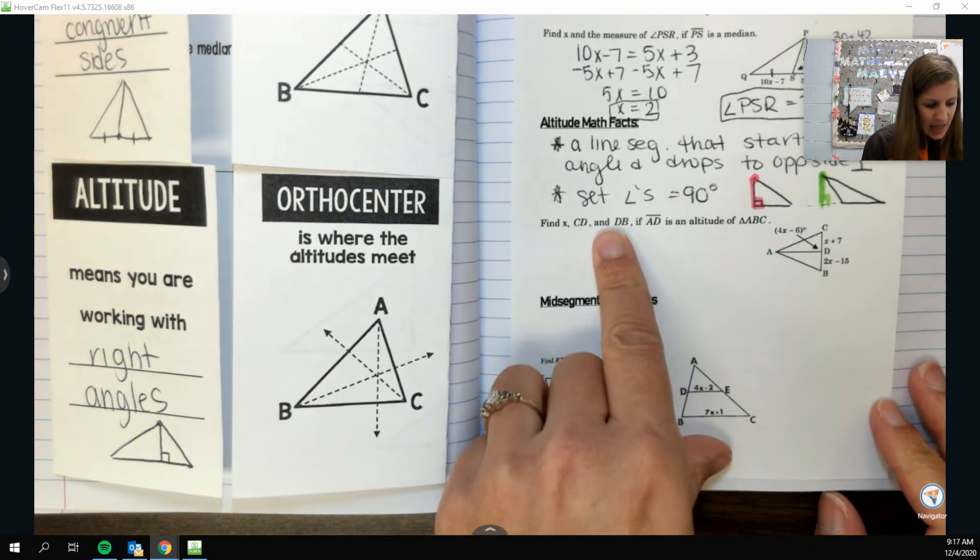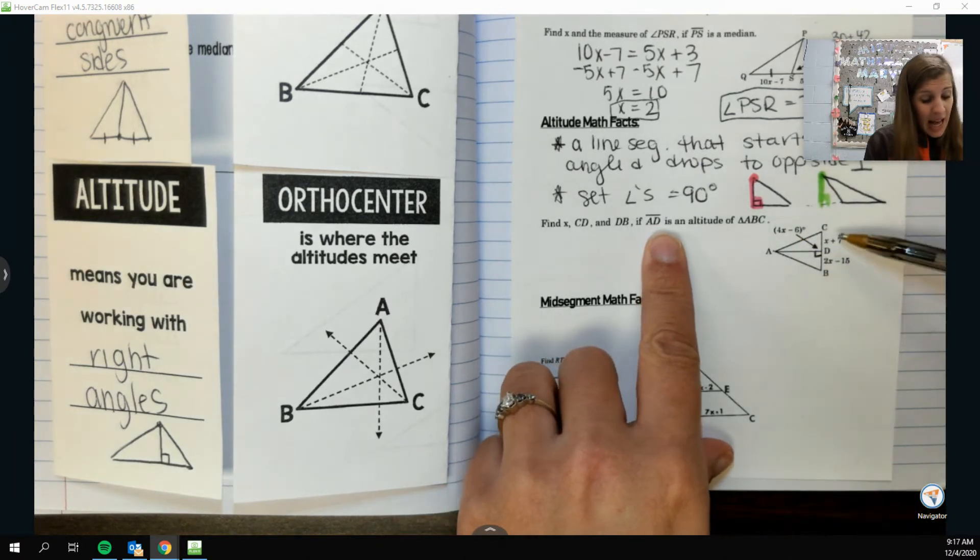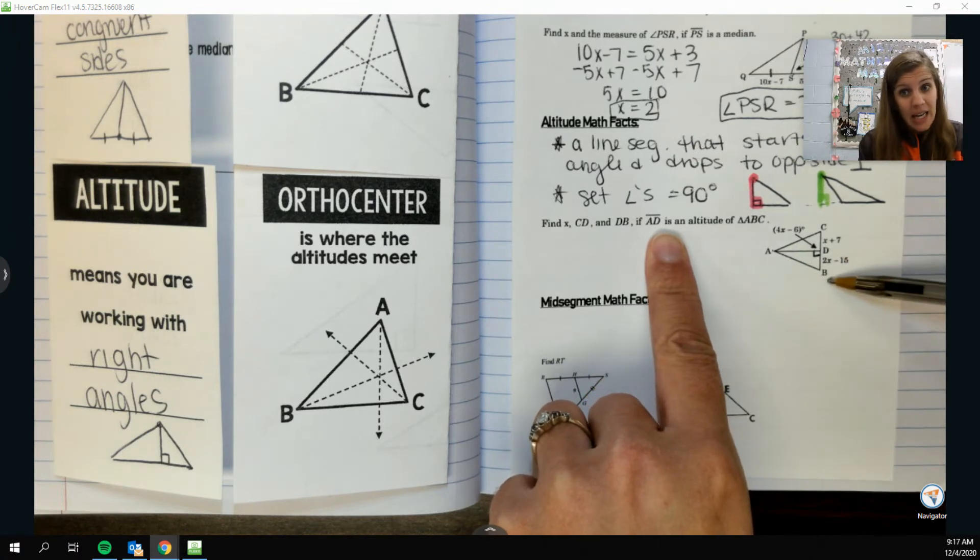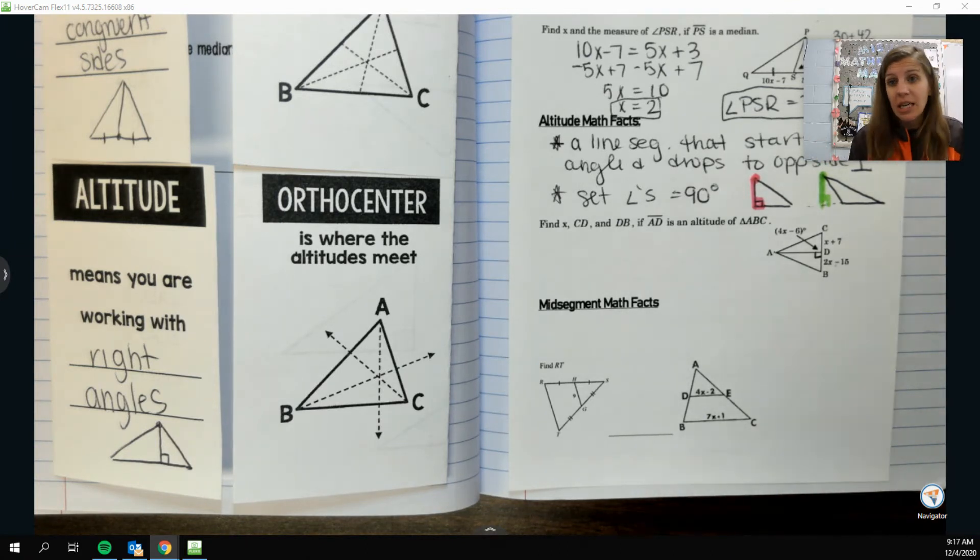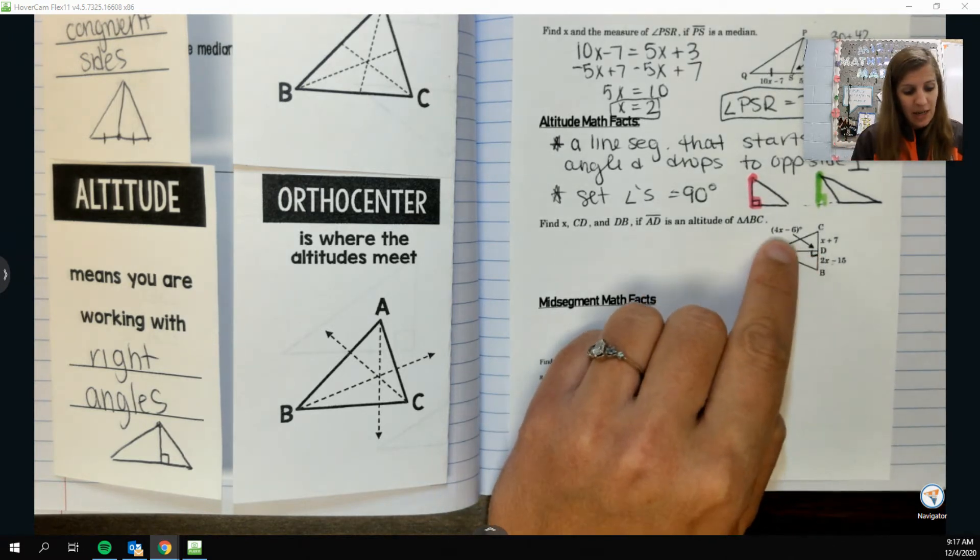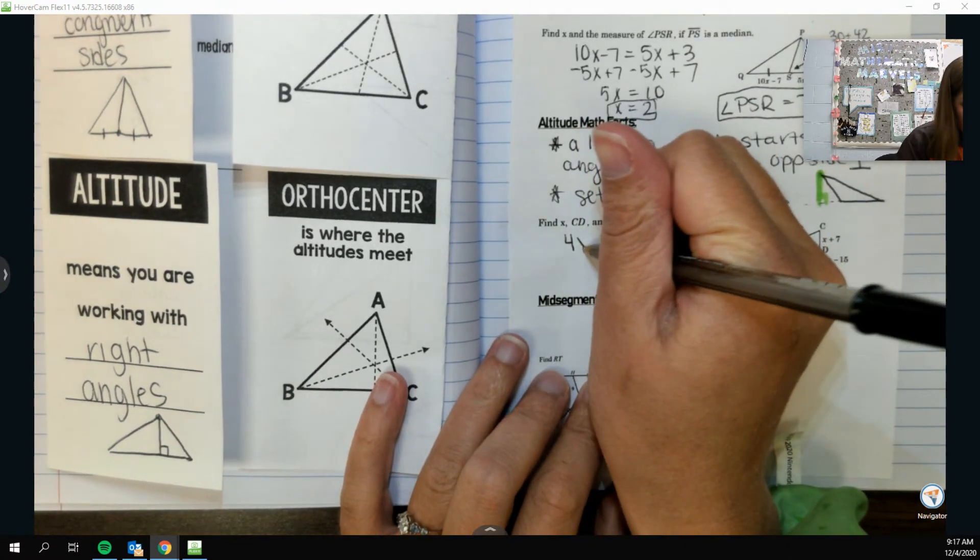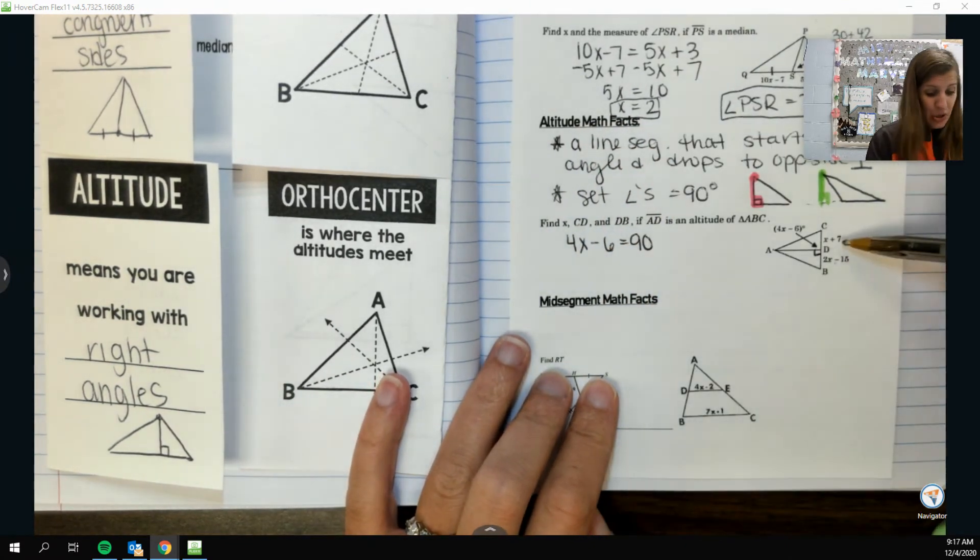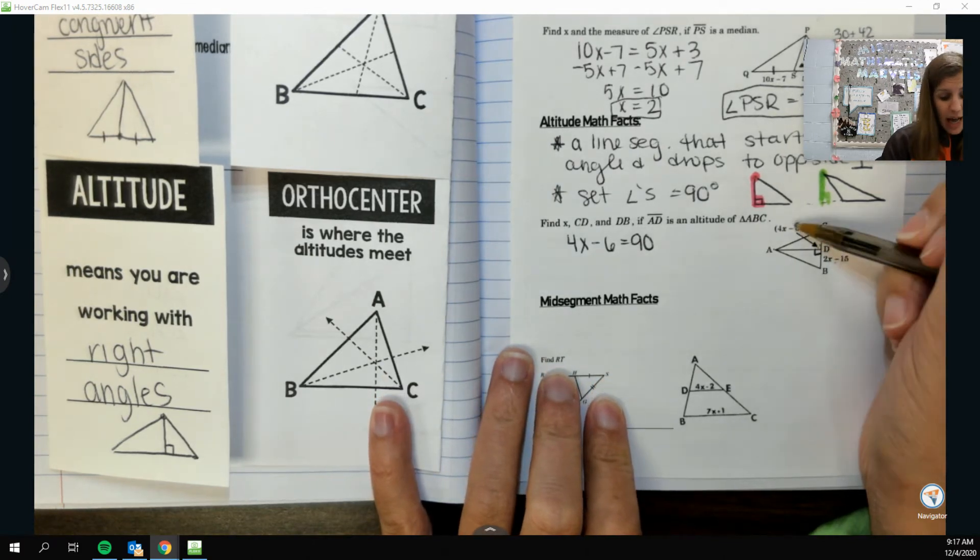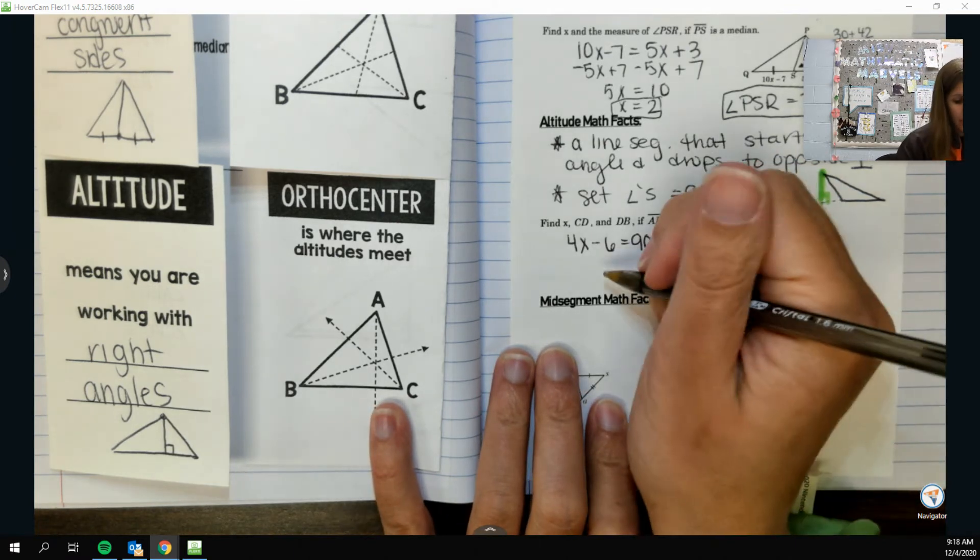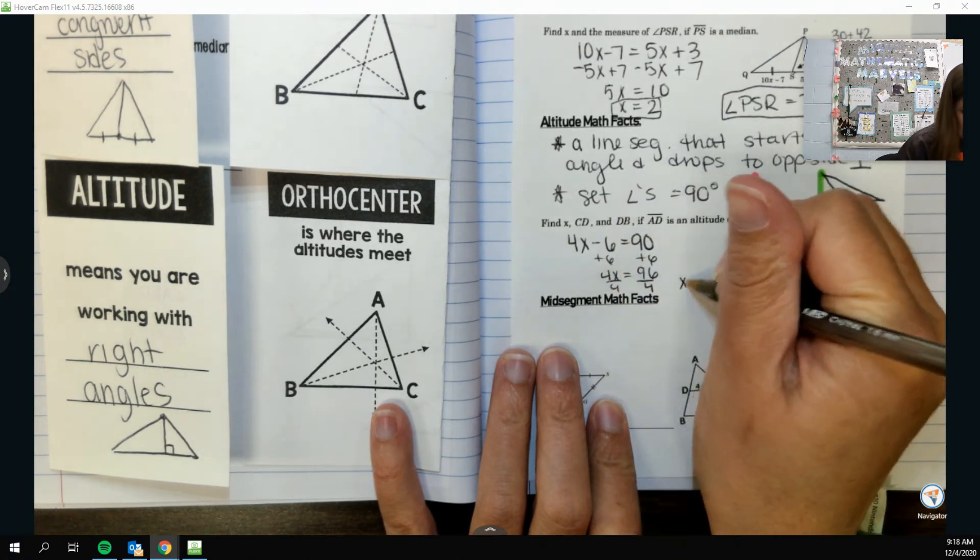All righty, so find X, CD, and DB if AD is an altitude. So if I know that this is an altitude, I know that this right here is 90. I don't know that these two sides are congruent, so I really shouldn't set those two little baby equations equal to each other because I don't know. An altitude doesn't guarantee that. What I do know though is that if they're talking about this angle right here as 4X minus 6 and it's pointing to that angle right there, it will be equal to 90. So that's how I should solve for X in this one. I shouldn't assume that these two things are equal, but I can, because an altitude by definition will touch at a 90, I can assume that this 4X minus 6 is 90. So I'll add the 6 over and we'll get 4X equals 96 and then divide by 4, so X is 24.